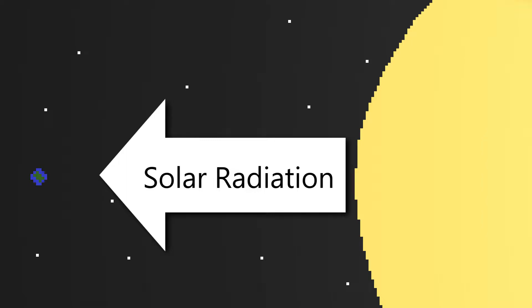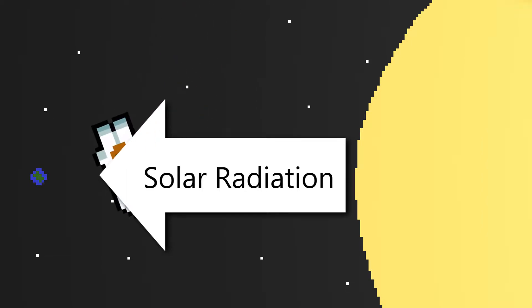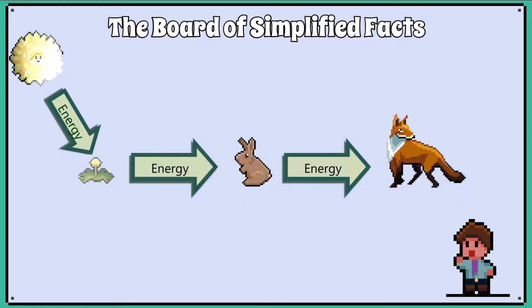The sun emits radiation, which is the main source of energy that supports life on Earth. Food chains visualise how the energy from the sun is transferred from organism to organism.